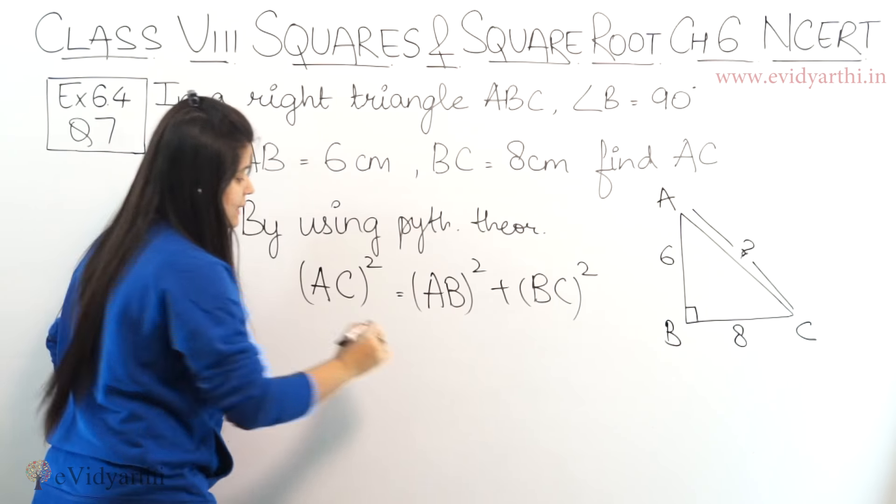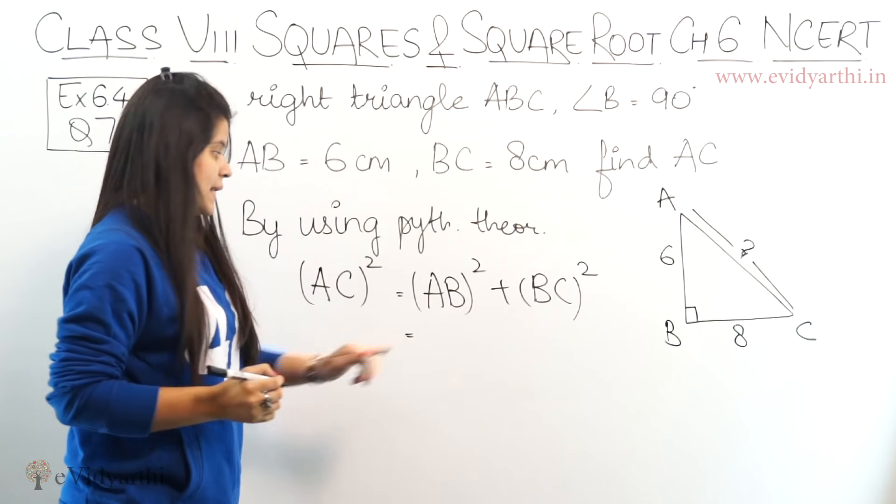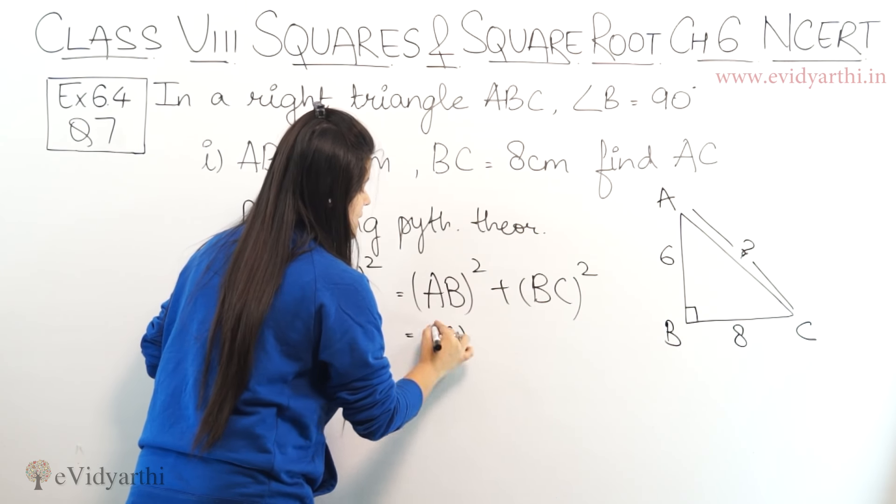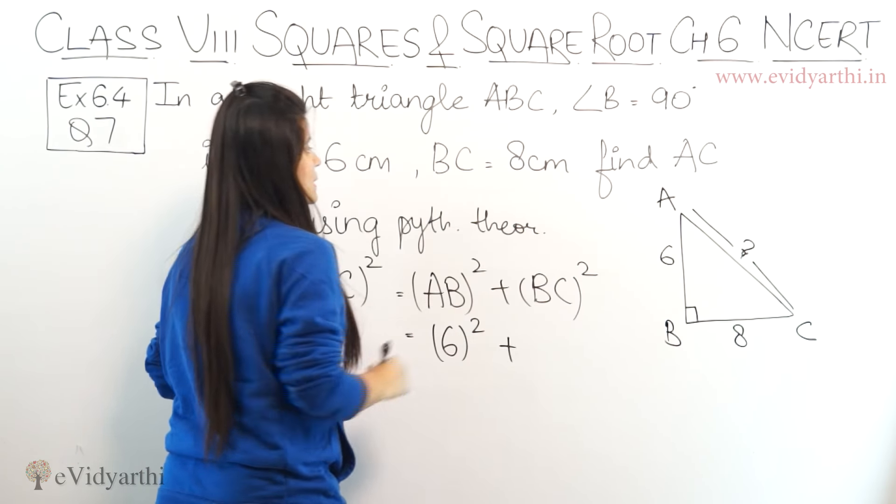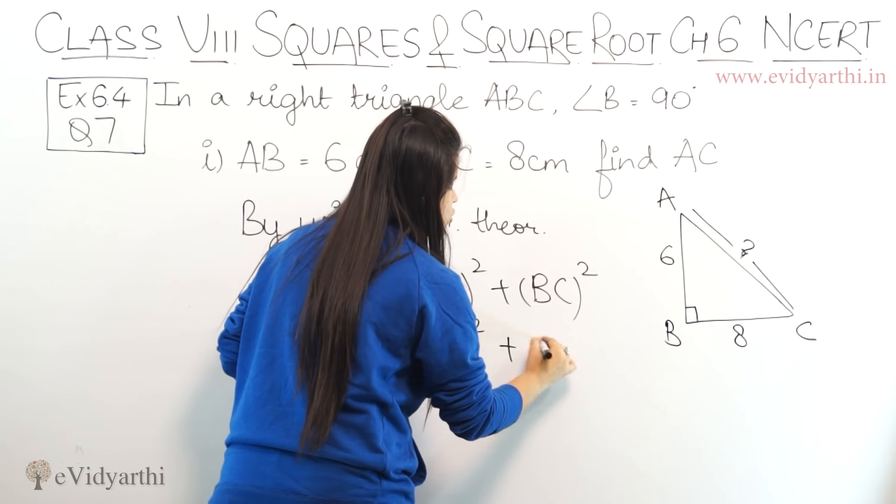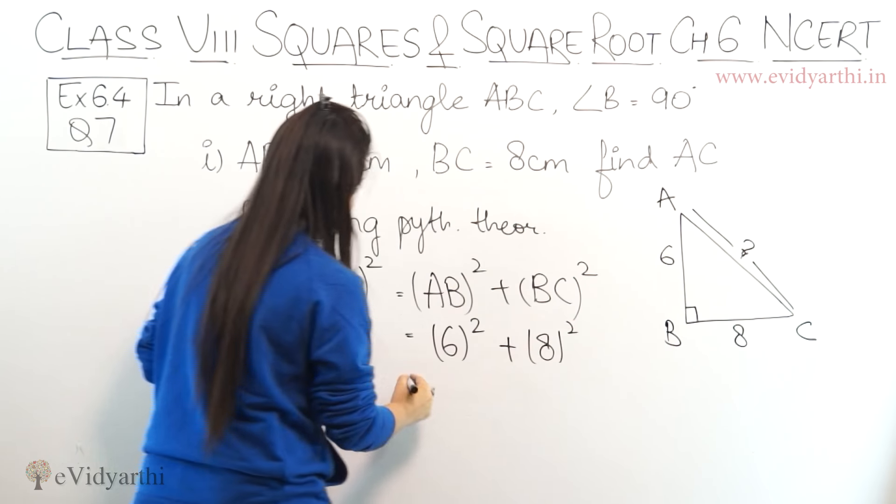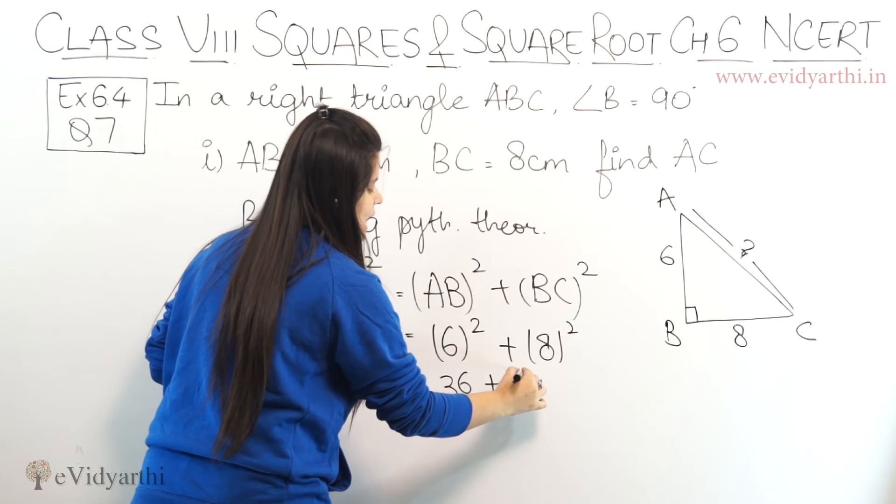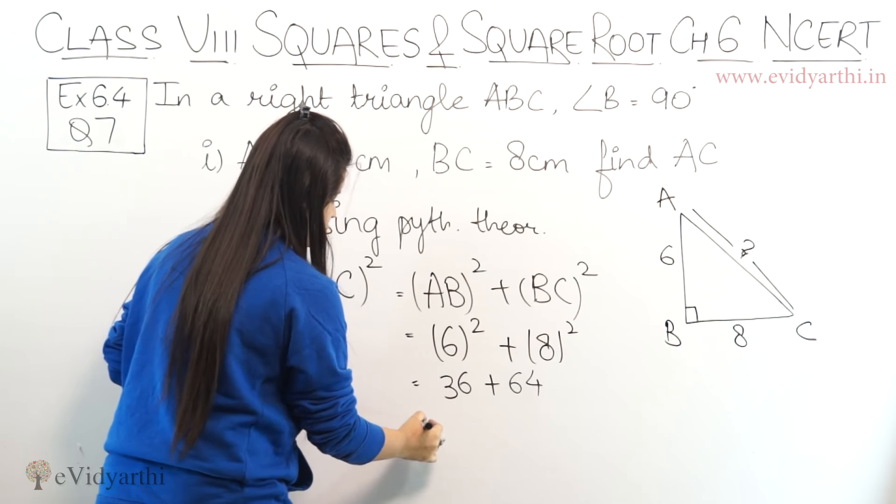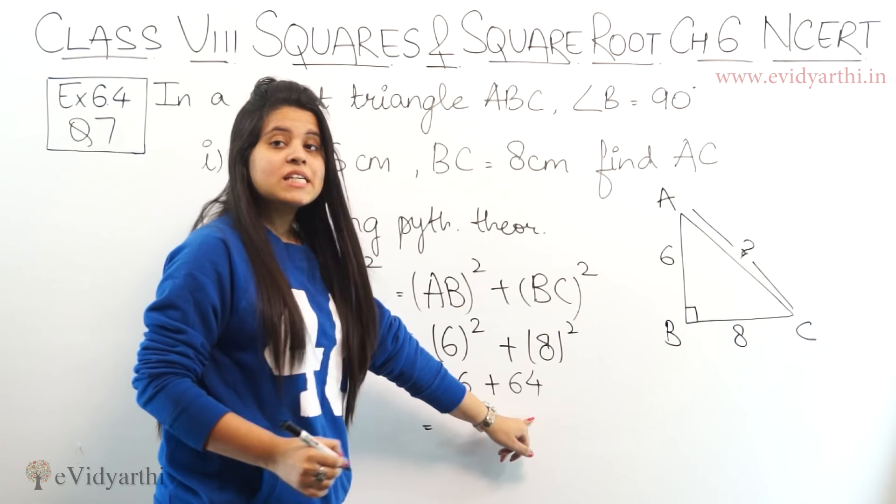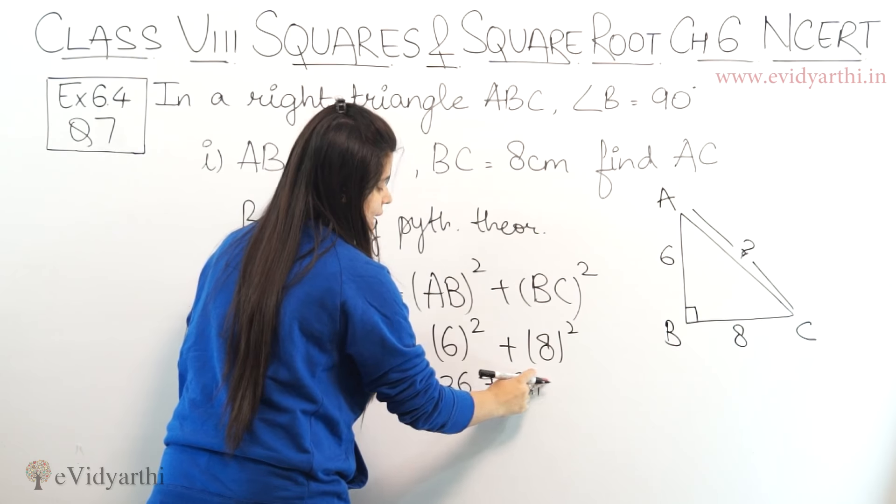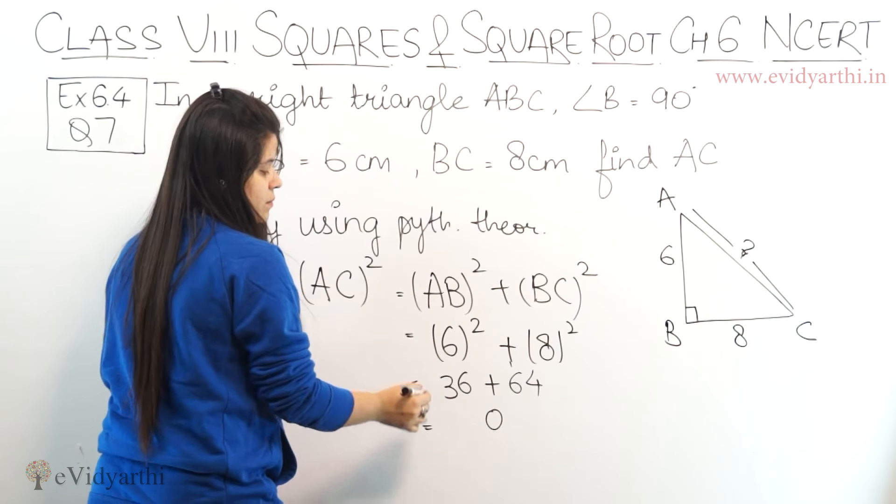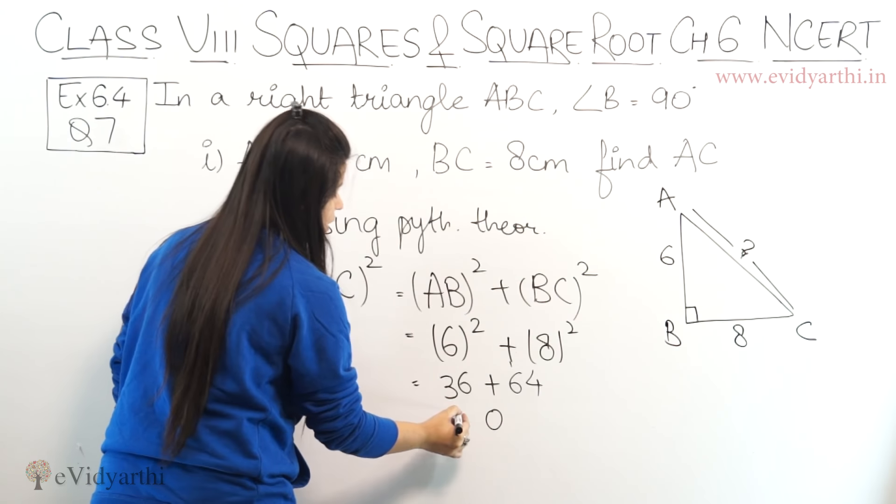Now AC we have to find. Given values: AB is 6cm, so 6 squared, plus BC is 8, so 8 squared. 6 squared is 36 plus 8 squared is 64. Adding these: 6 plus 4 is 10, we have 61 that is 7 plus 3 is 100.